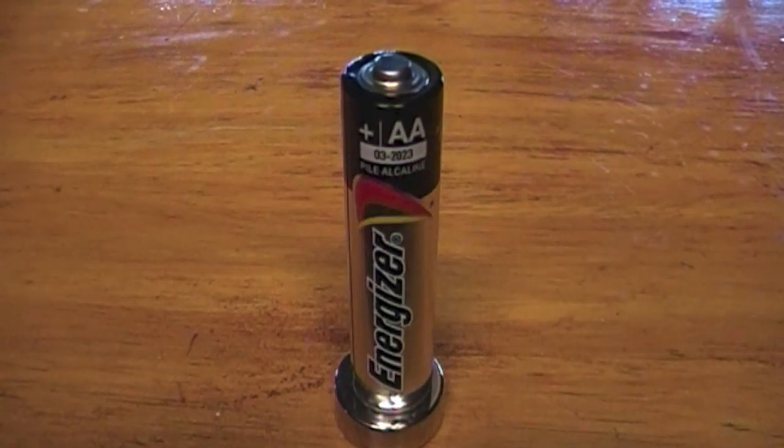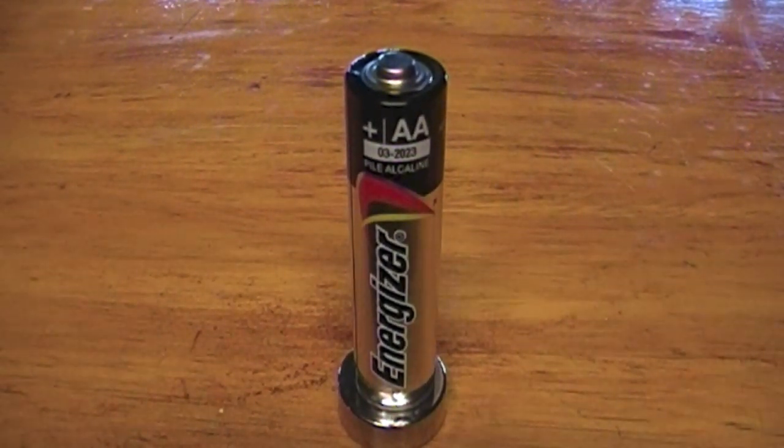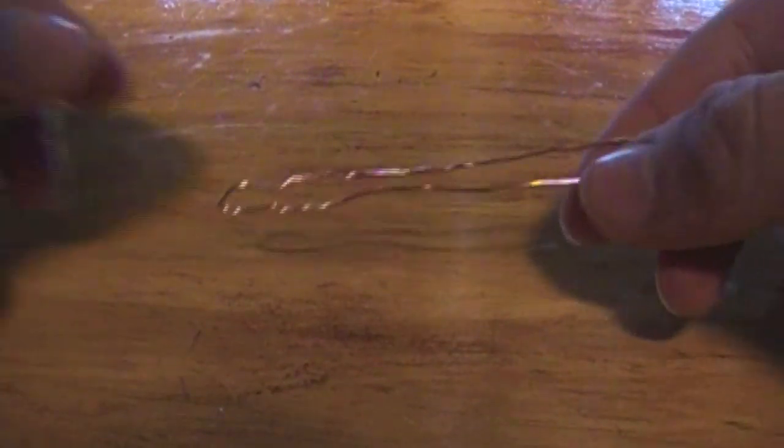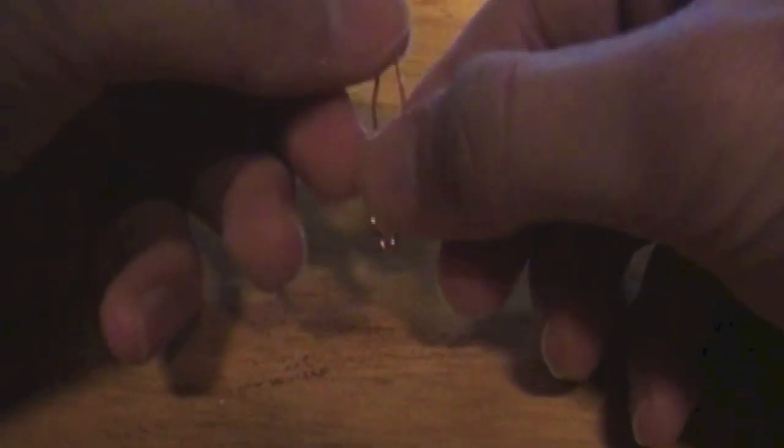Alright, so once that's done, you're just going to take out your battery and you're going to attach it to your magnet, it's pretty simple. Then you're going to take your V shaped copper wire and you're just going to bend it into kind of like a circular shape on both sides. This is basically just to allow it to stay on the magnet. You want it equal on both sides so it doesn't fall off when you put it on.